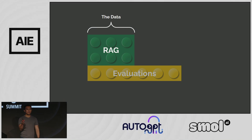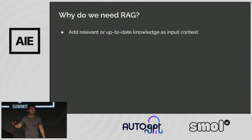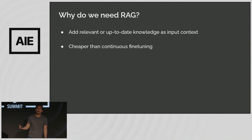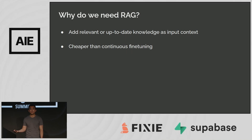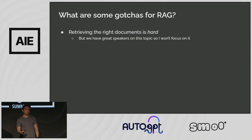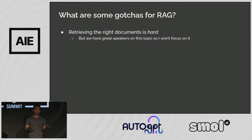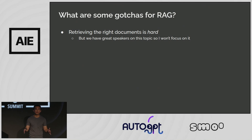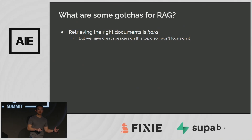Now, retrieval augmented generation. It lets us add knowledge to our model as input context where we don't have to rely solely on the model's knowledge. And second, it's far more practical — it's cheaper and more precise than continuously fine-tuning to new knowledge. But retrieving the right documents is really hard. We have great speakers sharing about this topic tomorrow, so instead I'd like to focus on the LLM side of things and discuss some challenges that remain even if we have retrieval augmented generation.